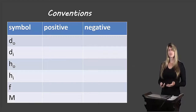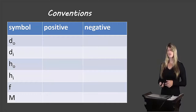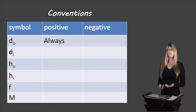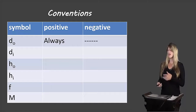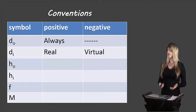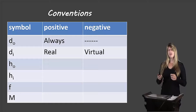Now let's take a look at the conventions — there are quite a few. The first few are the same as what we've seen already, and then there are a couple of new ones. For DO, it will always be positive. The object distance for every single question will be positive — it should never be a negative number. For the image, if it is a real image, we'll use a positive number for DI, and if it's a virtual image, we'll use a negative number for DI.